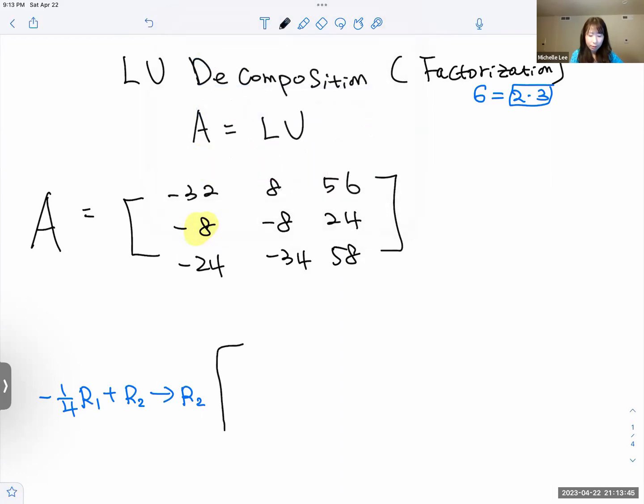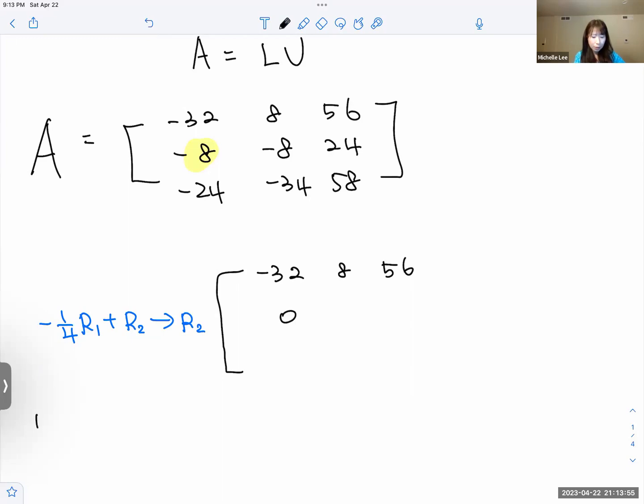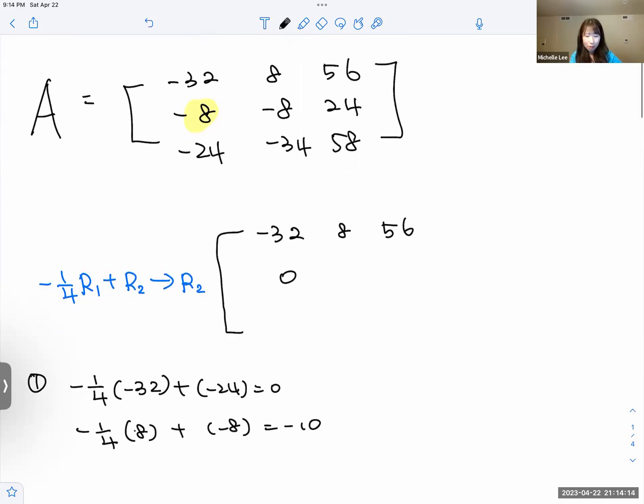So we have negative 32, 8, 56, and there is zero. Let me write down for you. So this is negative 1/4, negative 32, and plus negative 24, which is zero. Negative 1/4, 8 plus negative 8 equal to negative 10. So this will be negative 10, and then negative 1/4, and we have 56. So 56 plus 24 equal to 10.